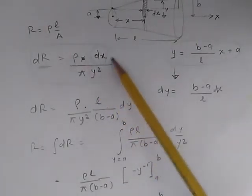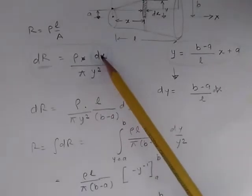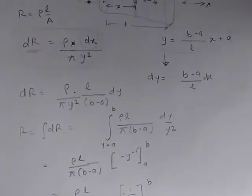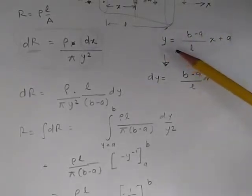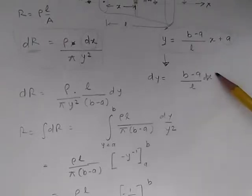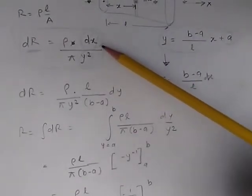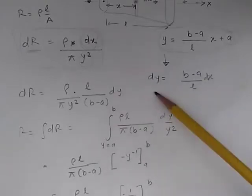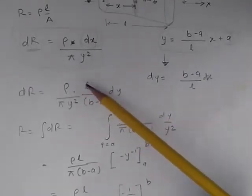We can do this by differentiating this relationship. When we differentiate, we get dy = (B - A)/L × dx. The constant A gets eliminated. We can write dx = L/(B - A) × dy.